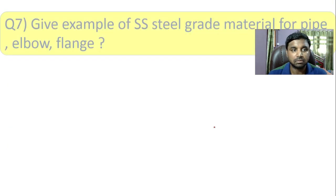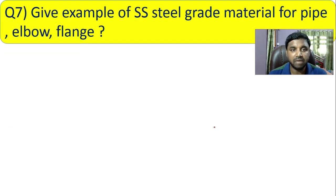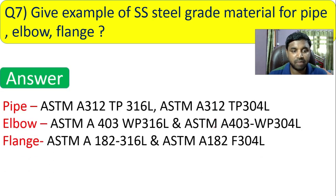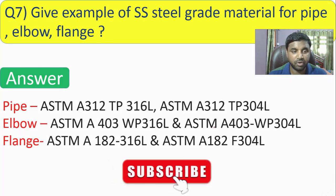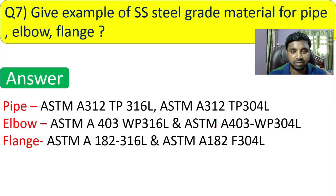Question 7: give examples of stainless steel grade material for pipe, elbow, and flange. For pipe: ASTM A312 TP316L and ASTM A312 TP304L. For elbow: ASTM A403 WP316L and ASTM A403 WP304L. You must remember these grades for stainless steel.